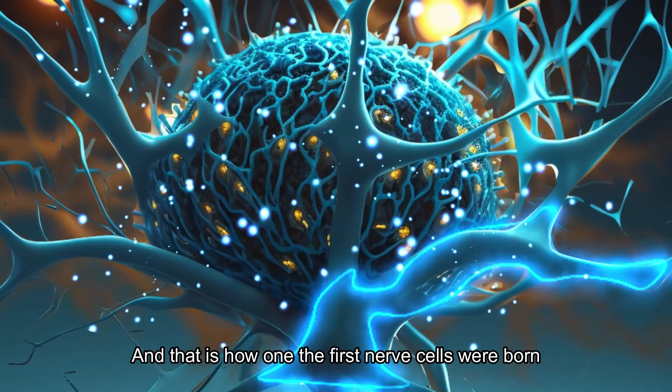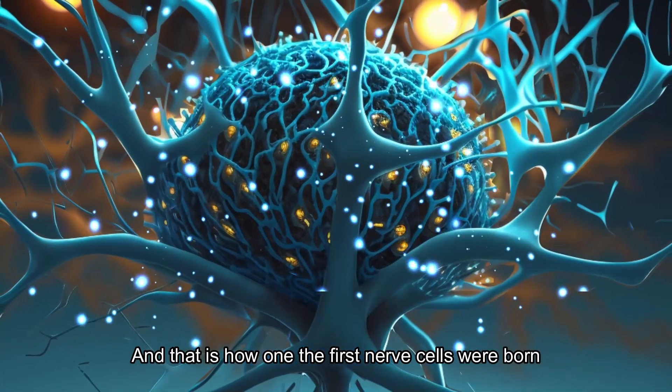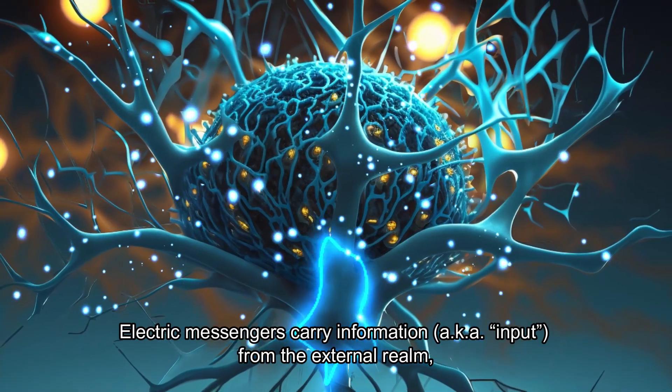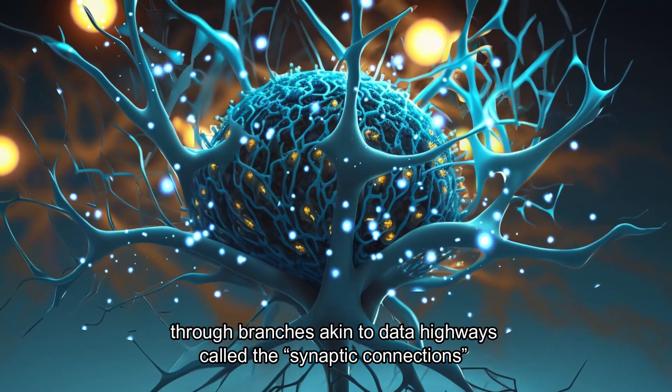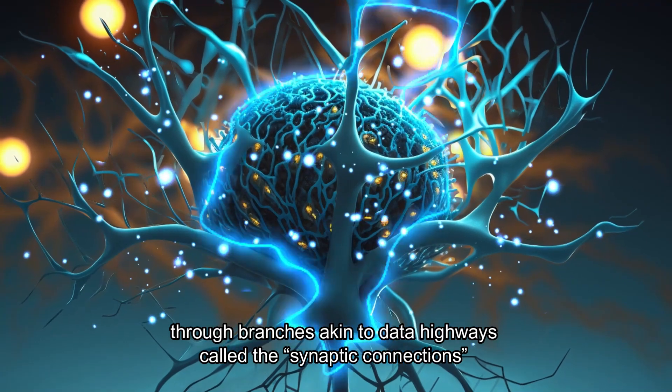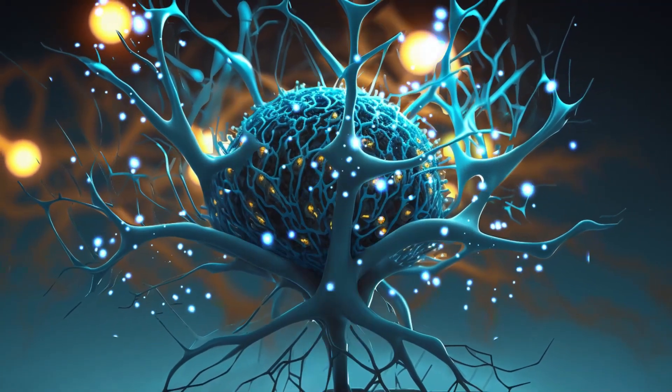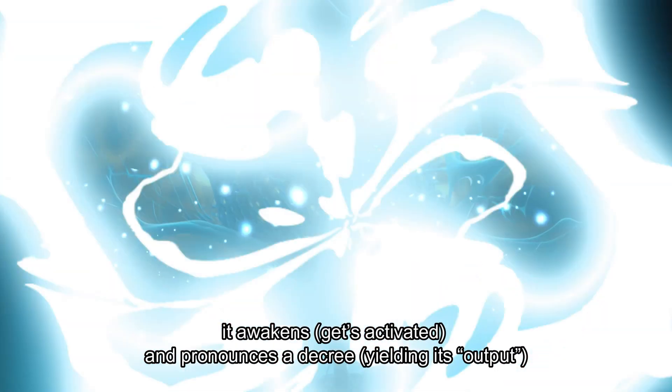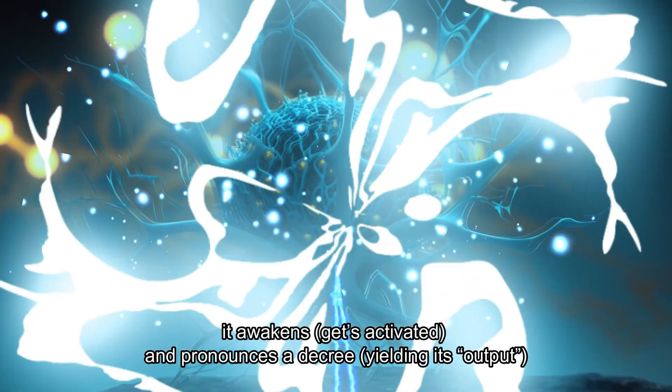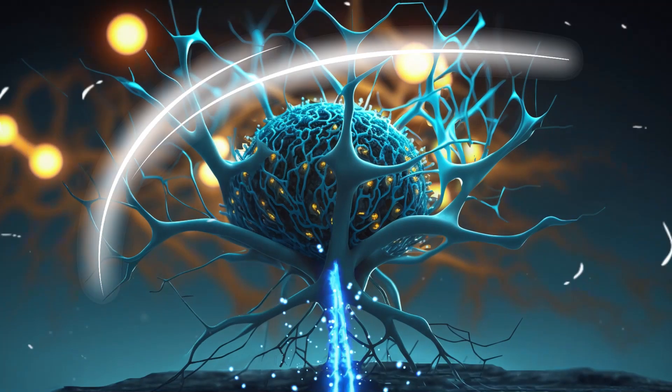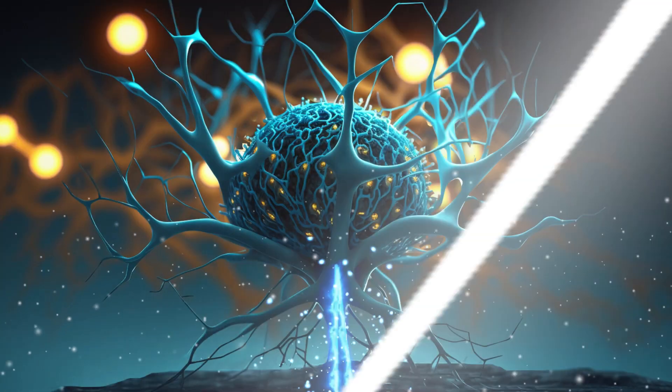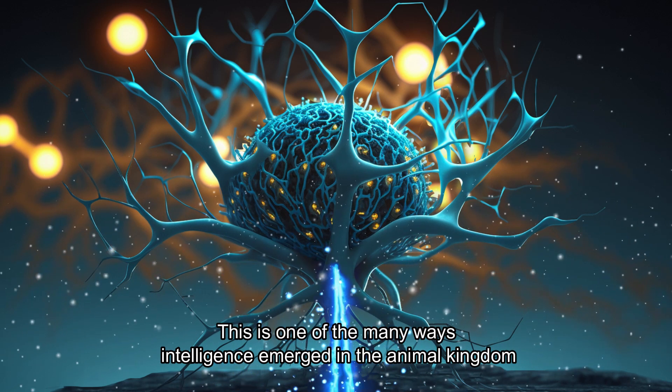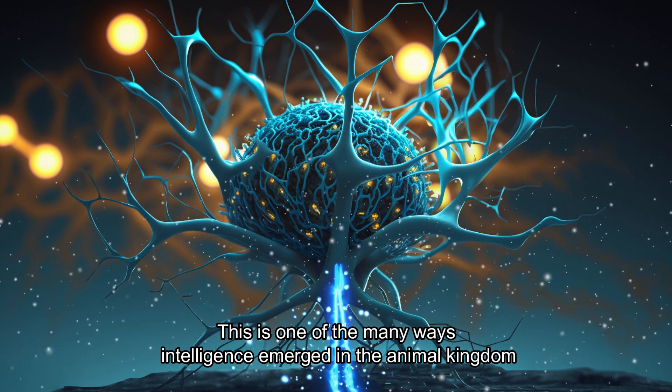And that is how one of the first nerve cells were born. Electric messengers carried information from the external realm through branches akin to data highways called the synaptic connections. When a neuron has heard enough of these signals, it awakens and pronounces a decree. This is one of the many ways intelligence emerged in the animal kingdom.